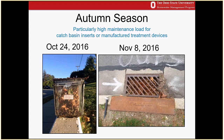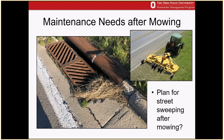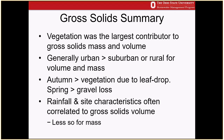Gross solids takeaways: autumn is a particularly high maintenance load — we saw catch basins completely full with leaves. Mowing was another factor, with grass accumulating and getting through the grate. Street sweeping directly after mowing may have value. Summary: vegetation was by far the largest contributor to both mass and volume; urban greater than suburban or rural; autumn the highest for vegetation.